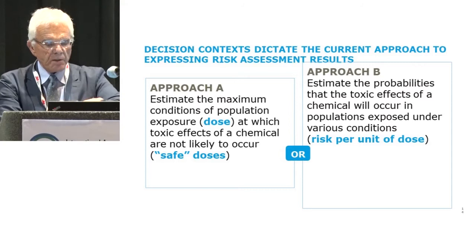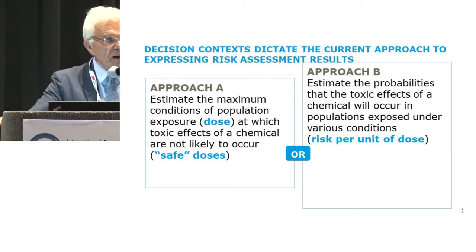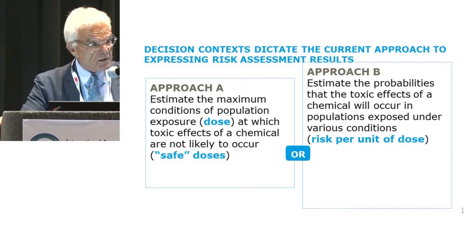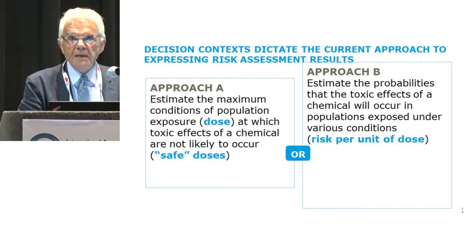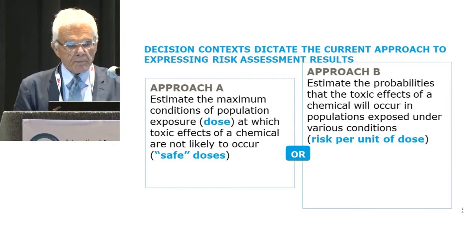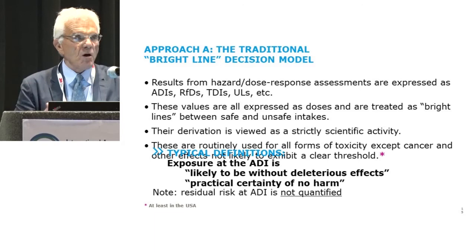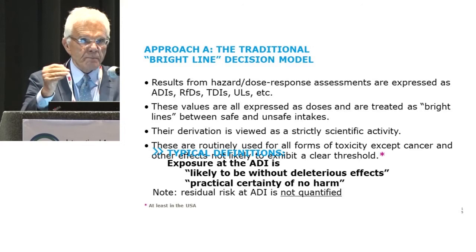There are two major contexts for decisions. Approach A requires only that you identify what we call a safe dose — some bright line difference between safe and unsafe exposures. The traditional bright line exposure in the food world rests upon what we call the allowable daily intake, or ADI. It is a term used to define that bright line separation between safe and unsafe exposures, defined only qualitatively — 'practical certainty of no harm' or 'likely to be without deleterious effects.'